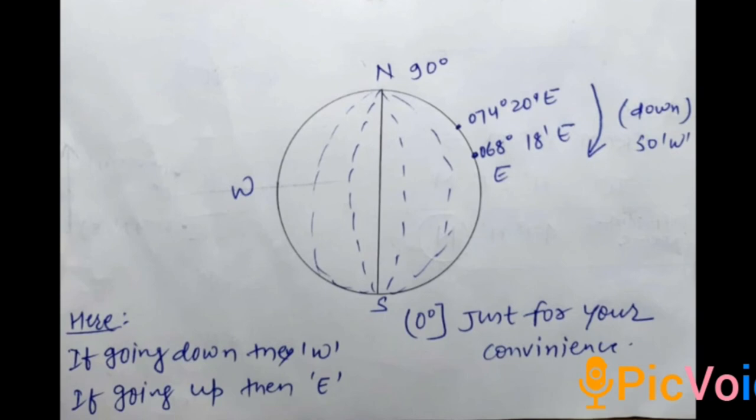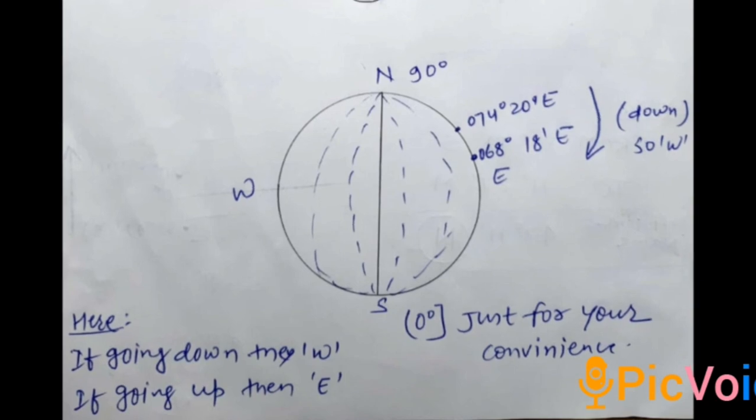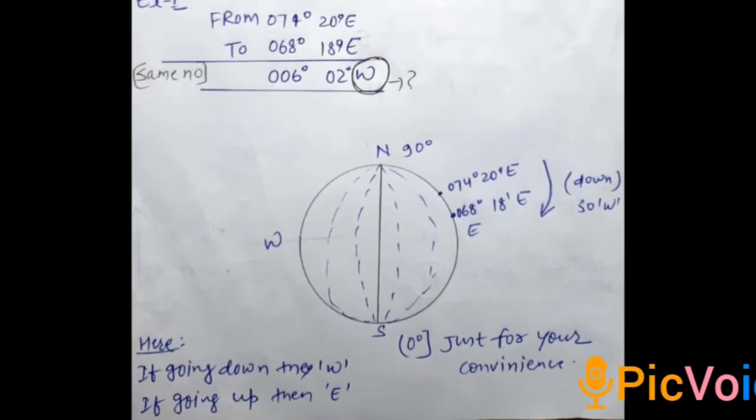I have written here in the slide: if we are going downward in D-Long, then it's West, and if you are going upward, then it's East. This is just for convenience. If you want to know by the proper rule, it is also given there, but this is the thing that you can put in your mind and you can solve it within a fraction of a second. This will be more helpful for you.